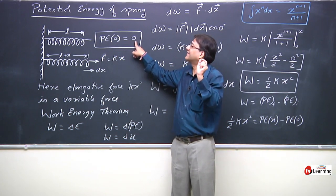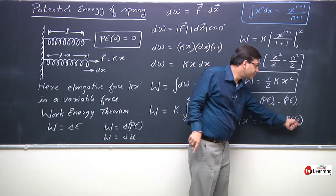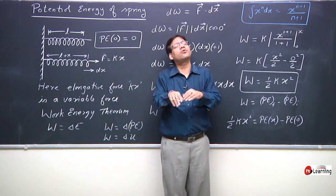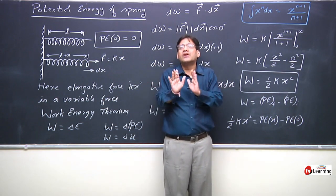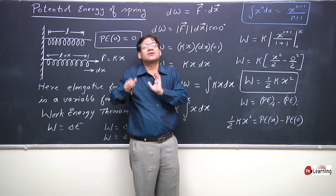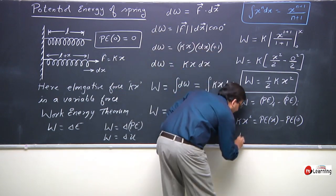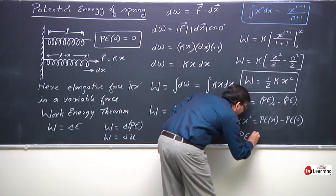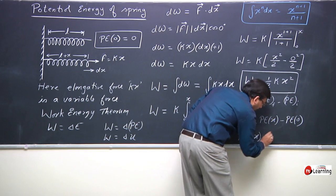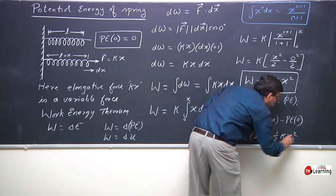This natural length is taken as a reference and we call it zero. When the spring is at its natural length, it has no potential energy. When we compress it or elongate it, some energy comes into it. The potential energy when the spring is elongated by x is always equal to ½kx².